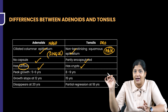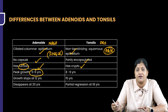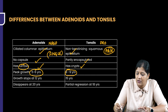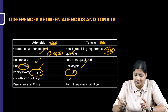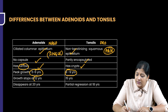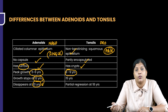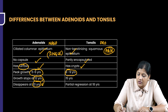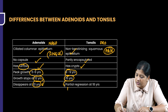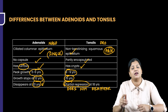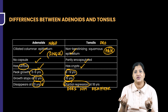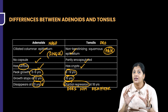The adenoid undergoes peak growth at five to six years of age, whereas tonsils undergo their peak growth at eight to nine years of age. There is a difference in when they undergo physiological enlargement. Adenoid will stop growing by 12 years and disappears by 20 years. But tonsil does not disappear — there can be a partial regression at 18 years, meaning they can undergo some shrinkage in size, but they will not disappear.